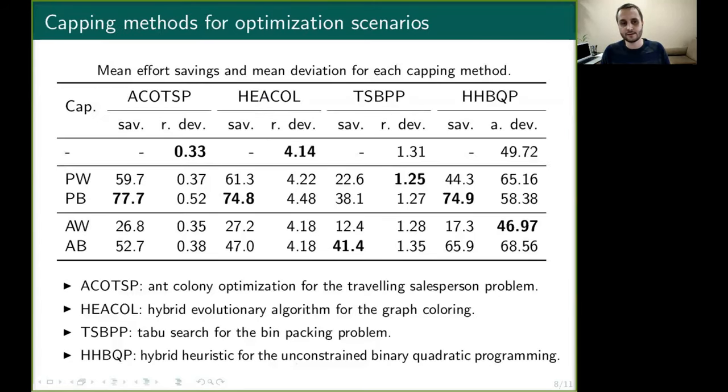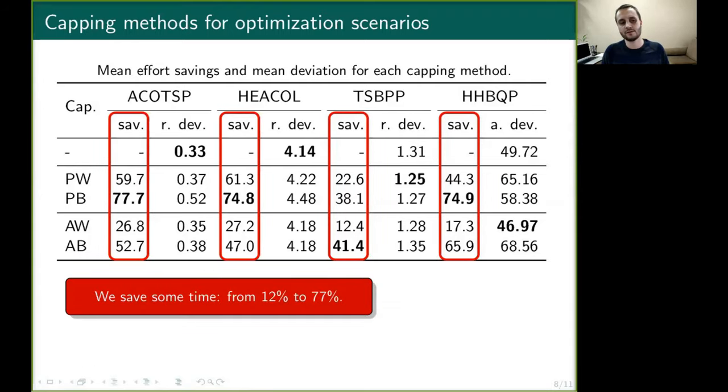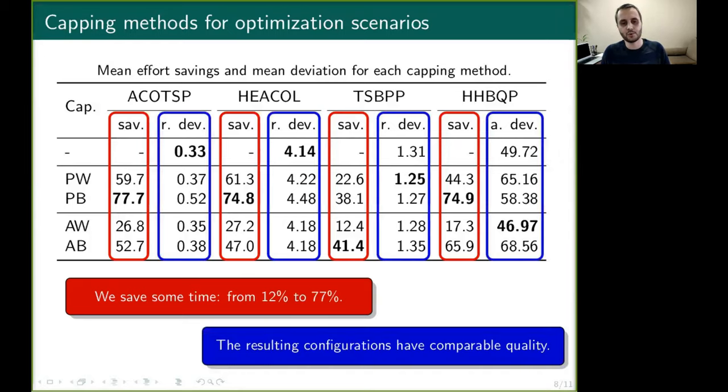We applied these methods to configure four different algorithms, and here we report the saved time and the deviations from the best known solutions. The main observation is that these methods can save a considerable amount of time, in some cases more than 70 percent, but also important, the performance of the resulting configurations does not degrade when using capping.